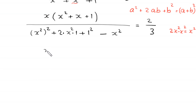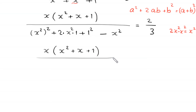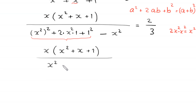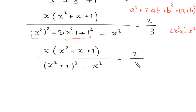Next, x times (x squared plus x plus 1), divided by — applying the identity — (x squared whole squared plus 2 times x squared times 1 plus 1 squared) becomes (x squared plus 1) whole squared minus x squared, equal to 2 over 3.